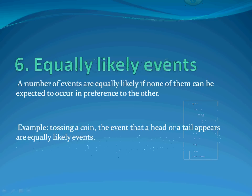Then is the equally likely event. A number of events are equally likely if none of them can be expected to occur in preference to the other. For example, if we toss a coin, the events of getting a head or a tail are equally likely, because there is no preference for one over the other.